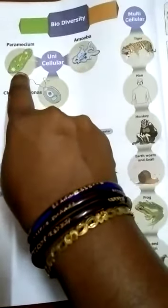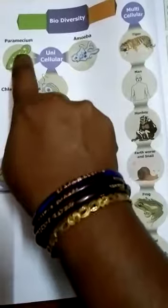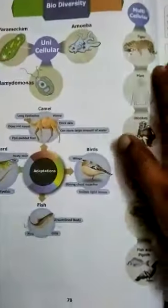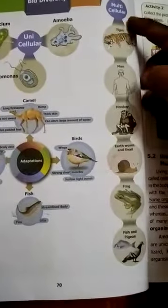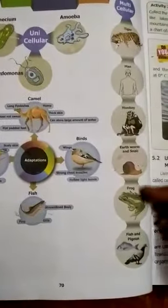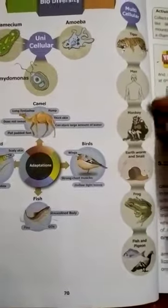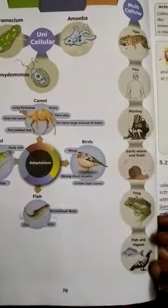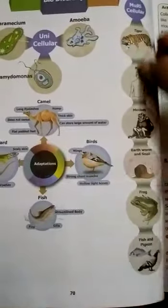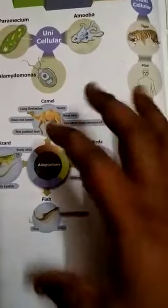The cell structure includes a cell membrane, nucleus, and cytoplasm. Multicellular means the organism is made up of many cells — 'multi' means many. We humans also come under that category, along with tiger, monkey, earthworm, frog, fish, and pigeon — all are multicellular.